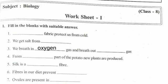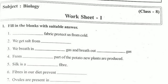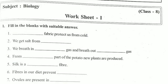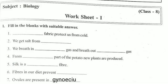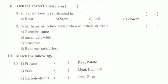From the blanks: potato plants are produced by — the answer is stem. Silk is a natural fiber. Fibers in our diet prevent constipation. Ovals are present in the ocean.